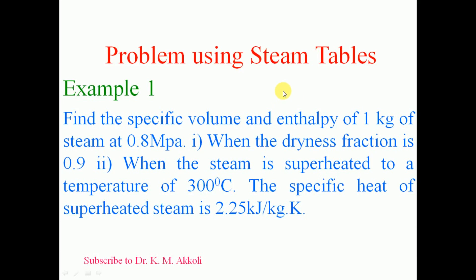Hello, in this session I am going to solve a problem on steam properties using steam tables. Find the specific volume and enthalpy of 1 kg of steam at 0.8 MPa: first case when the dryness fraction is 0.9, second case when the steam is superheated to a temperature of 300 degree Celsius. The specific heat of superheated steam is given as 2.25 kilo joule per kg kelvin.